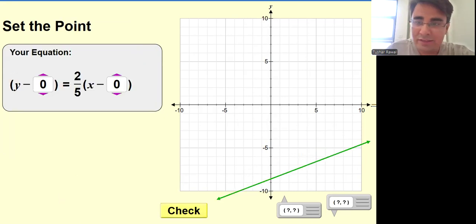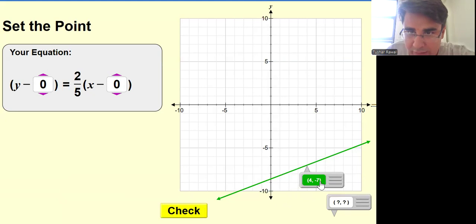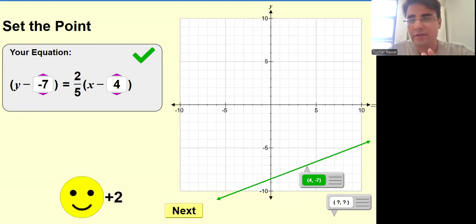Next, y minus y one equals to slope x minus x one is the equation of the line. We have to place the point. So over here, let me just figure out any one point. That's one point. That's it. I just need to find out this particular point. So my x value is four. So I'll just place over here four. And minus seven. So I'll just place minus seven over here. And let me just check.